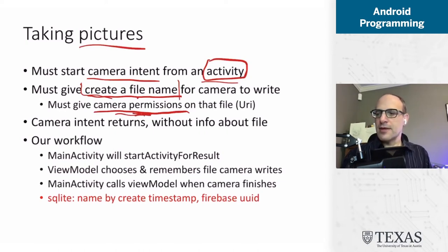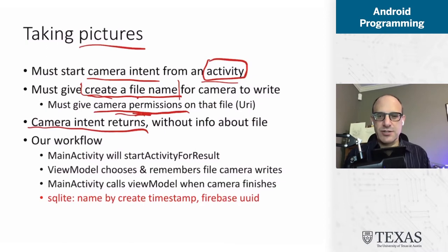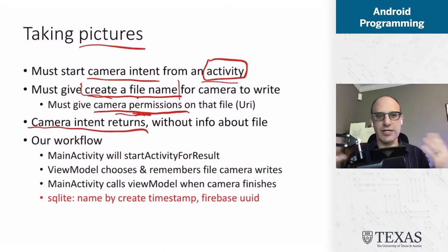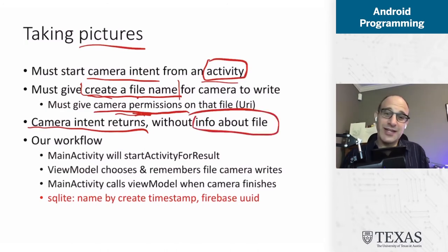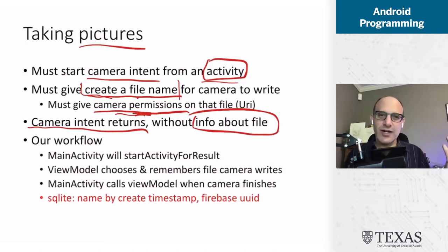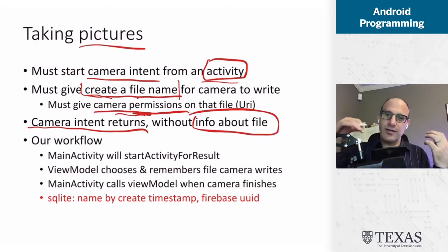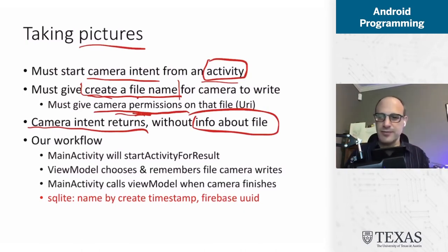That's a good thing, but it makes things a little more awkward, because before we call the camera, we need to create a file name and give the camera permissions on that file name. The camera takes the picture — you can reject or accept it, that all happens in the camera app — and then when the camera's done, it returns to the activity that spawned it. The start-activity-for-result callback fires, but it doesn't pass any information about the file. So we need to remember that file name, generate it, store it in the view model, and put it all together when the intent comes back.